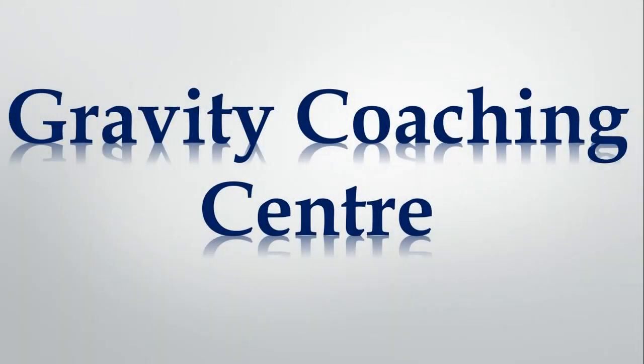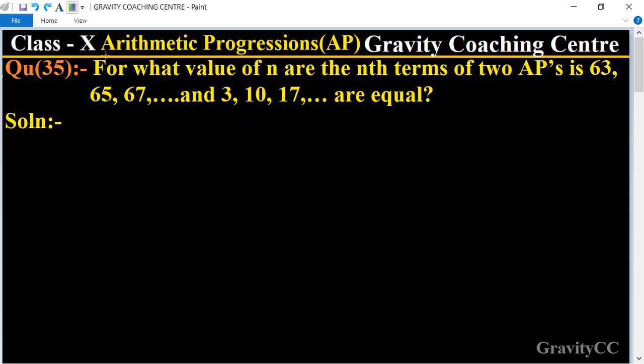Welcome to our channel Gravity Coaching Center, Class 10, Chapter Arithmetic Progressions, Question Number 35. For what value of n are the nth terms of two APs, 63, 65, 67, dot dot dot, and 3, 10, 17, dot dot dot, equal? In both the APs, whose nth term is identical, equal.